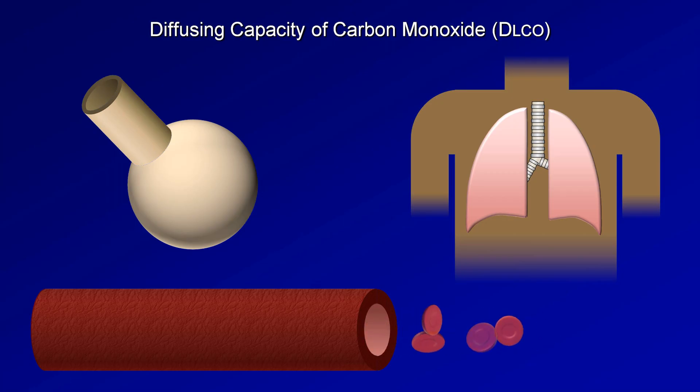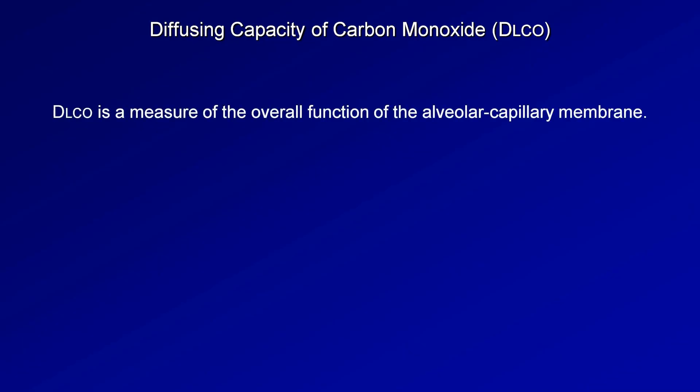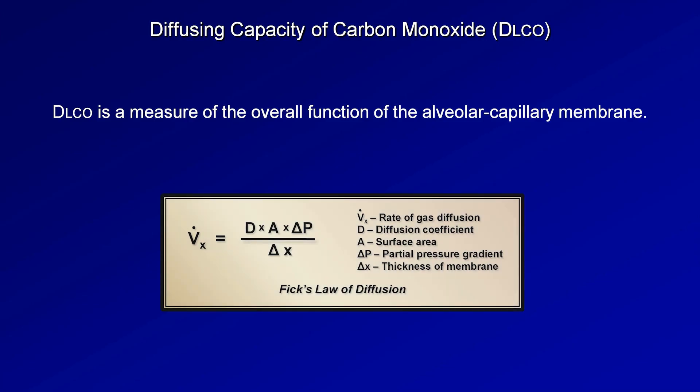A measured DLCO that is less than 40% predicted is considered severe impairment. Since the carbon monoxide travels via simple diffusion, the DLCO effectively measures the overall function of the alveolar capillary membrane. This function can be qualitatively understood using Fick's law of diffusion, which states that the rate of gas diffusion is equal to the diffusion coefficient times the surface area times the partial pressure gradient, all divided by the thickness of the diffusing membrane. Thus, any lung disease which either decreases functioning alveolar surface area or increases the thickness of the alveolar capillary membrane will lead to a decreased DLCO.